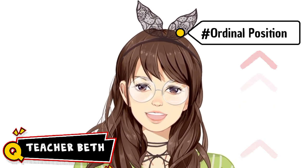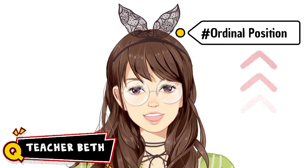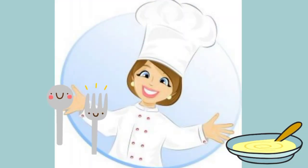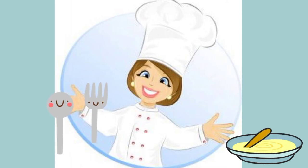Let's have a drill on telling the ordinal position of an object in a row. This is Elsa. She loves to cook. Let's have a look at some things found in her kitchen.